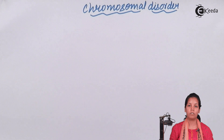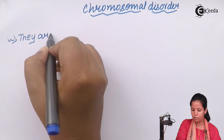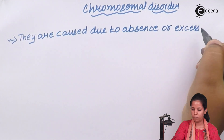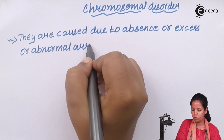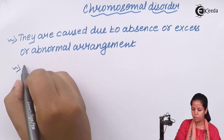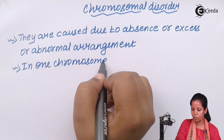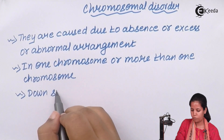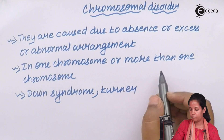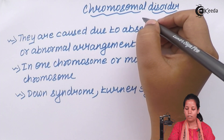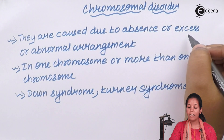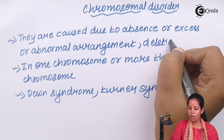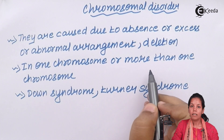The most classic example is Down syndrome. Chromosomal disorders may be caused due to the absence or excess of chromosomes, or due to abnormal arrangement or deletion of one or more chromosomes — when that happens it may lead to a chromosomal disorder.